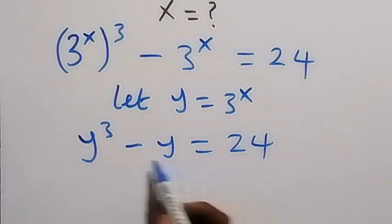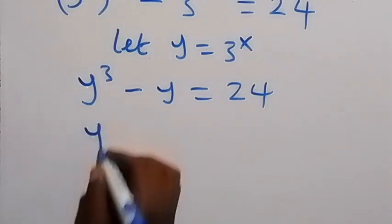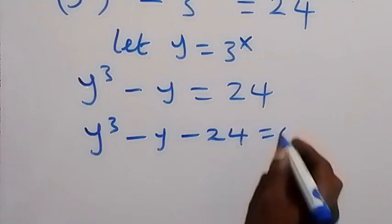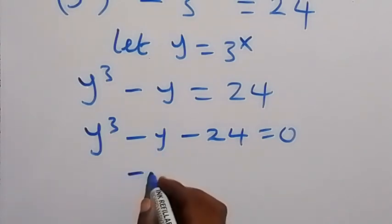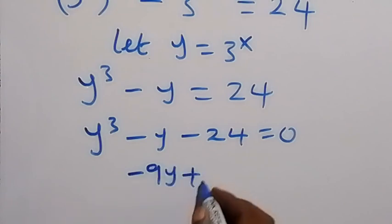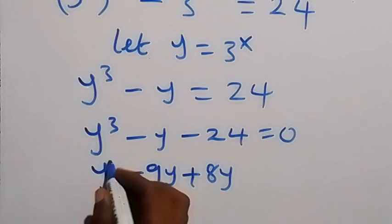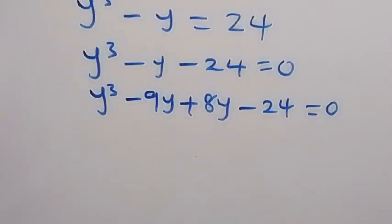Let's bring 24 to this side to form an equation. This will be y cubed minus y minus 24 equals zero. Here we can write minus y as minus 9y plus 8y, which gives us back minus y. Then we have y cubed minus 24 equal to zero.